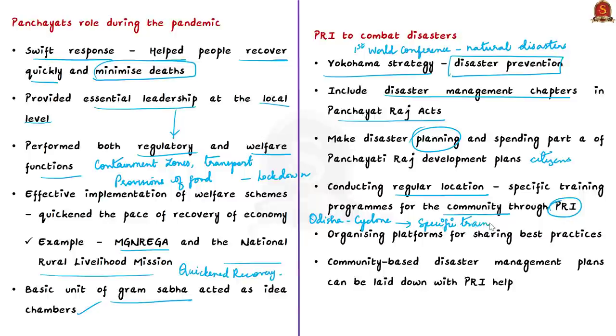Next comes the importance of conducting regular location-specific training programs for the communities through the concerned Panchayati Raj institutions. Some areas are vulnerable to some disasters only. For example, coastal Odisha will be vulnerable to cyclones but not landslides. So specific training needs to be imparted to concerned villages through these institutions.